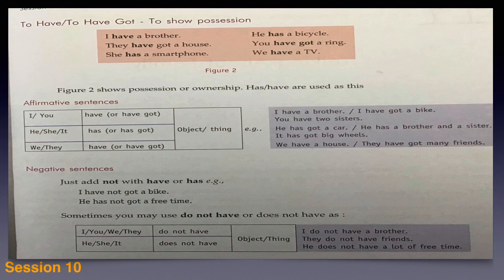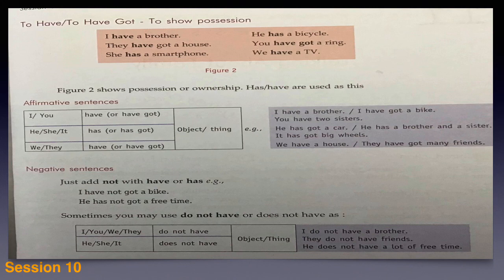It has got big wheels. Then with we and they: we have a house, they have got many friends. So the use of have and has — with first and second person singular, and all plural forms, we use 'have' or 'have got'. With third person singular number, 'has' or 'has got' is used.